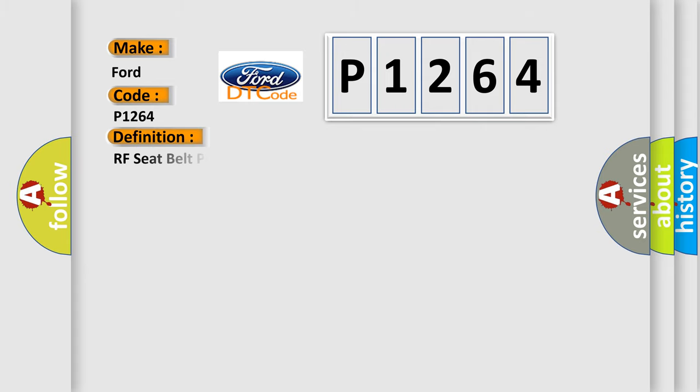The basic definition is RF Seat Belt Pre-Tensioner Circuit Open. And now this is a short description of this DTC code: RH Seat Belt Buckle Pre-Tensioner Circuit is Open.